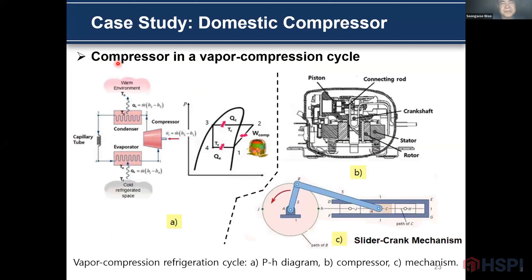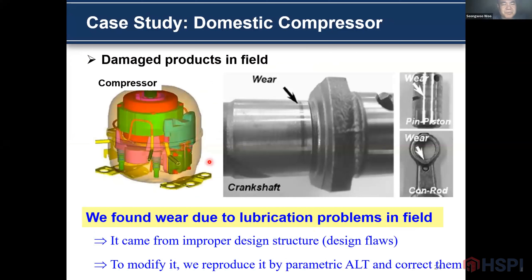This is the compressor in the vapor compression cycle. The vapor compression cycle consists of the compressor, condenser, expansion tube, and evaporator. This is the P-H diagram, and this is the schematic diagram of the compressor. The compressor operates by a slide clamp mechanism. We found a lot of wear due to a lubrication problem in the compressor piston. It came from an improper design structure, and to modify it we can reproduce the failure in the piston and the collector.